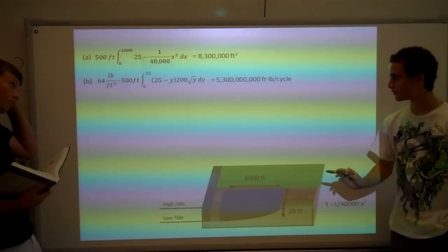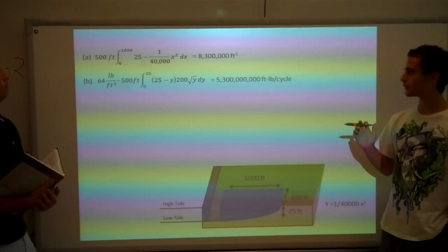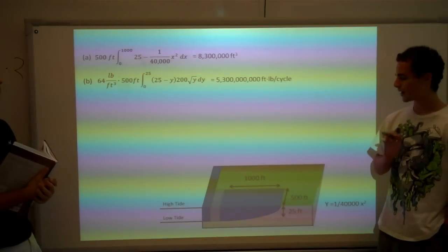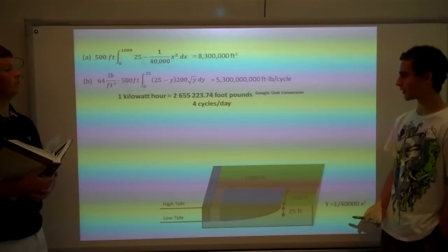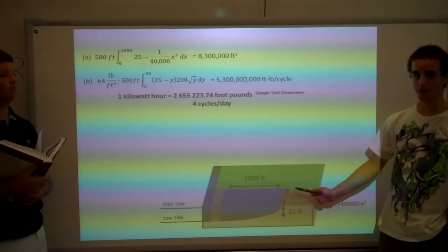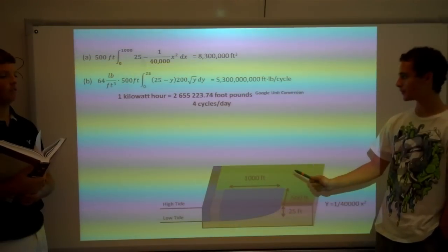And you're going to get about 5 billion, 300 million foot-pounds per cycle. And if you know anything about tides, you know that there's four cycles of filling and emptying a day. So fills, empties, fills, empties.